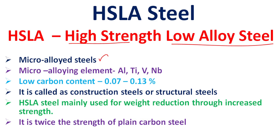The alloying elements in HSLA steel are aluminium, titanium, vanadium, and niobium. The carbon content is in the range of 0.07 to 0.13 percent, which is a very low carbon content.